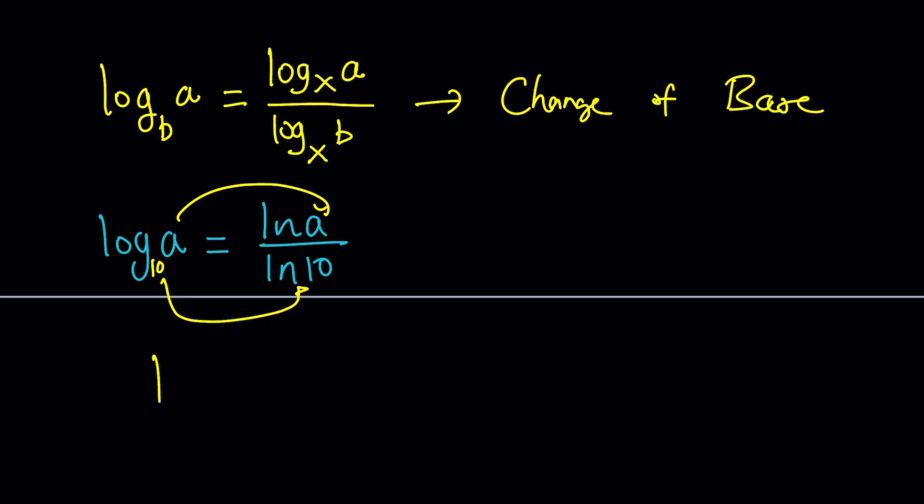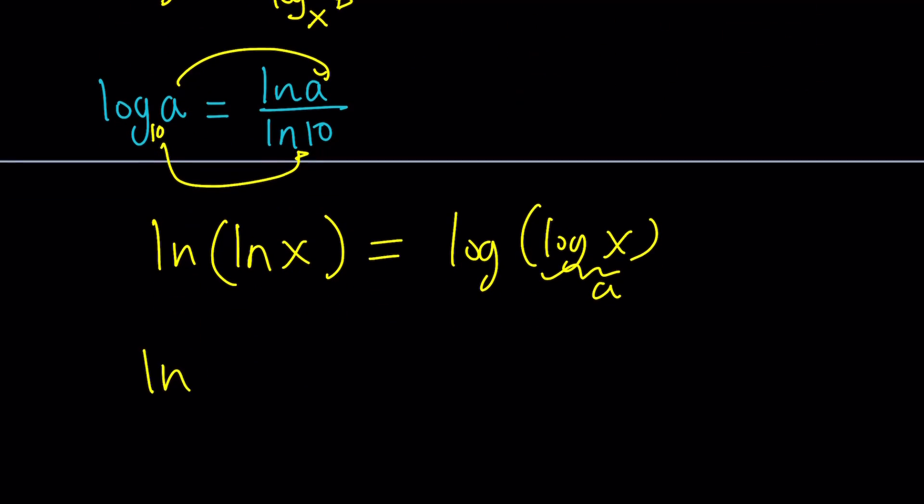We'll replace log a with ln a over ln 10. So on the right hand side notice that we have ln ln x equals log of log x. This is going to be my a. So we're going to write the right hand side as ln of log x divided by ln 10. Obviously the denominator is a constant. It's not going to change.